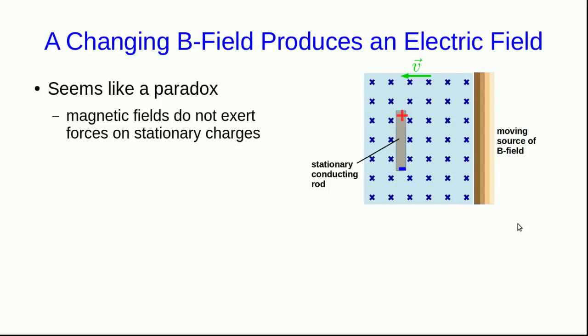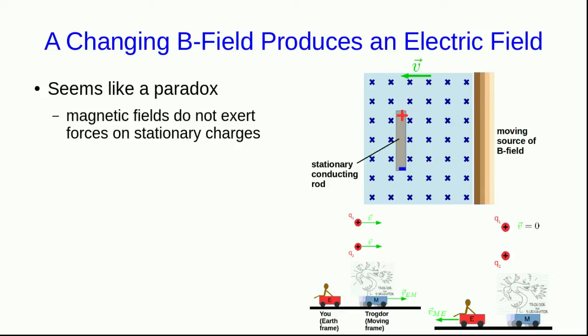This may seem like a paradox, because we know that magnetic fields do not exert forces on stationary charges. And the charges inside that rod are most certainly stationary. So how is it that we here have a magnetic field that's apparently exerting forces on it? Well, the resolution is something we've already seen. We know that the interactions between objects can depend on your frame of reference. Two moving charges, in the frame from which you see them as moving, will have magnetic forces that they exert on each other.